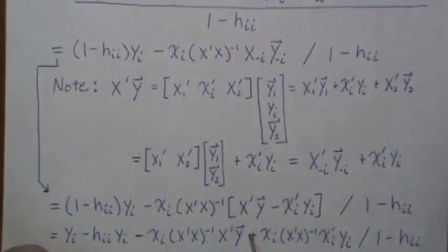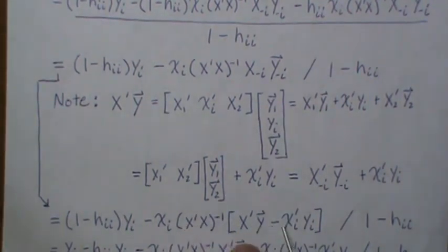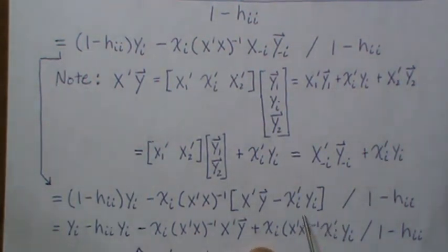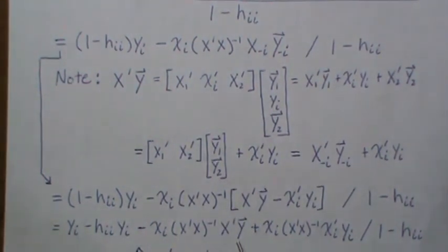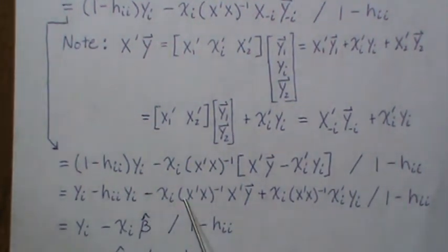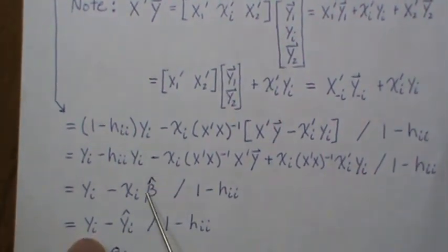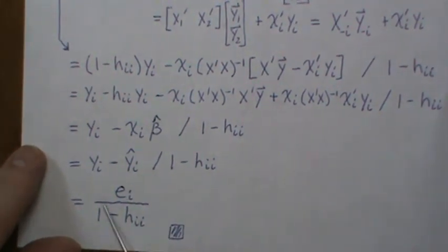After cancellation, the remaining term involves X_i·(X_transpose·X)^{-1}·(X_transpose·Y), which is just Y_i_hat — the fitted value from the full model at the ith observation. Substituting that in, the numerator becomes Y_i minus Y_i_hat, which is exactly the ordinary residual e_i. Dividing by (1 - H_{ii}), the PRESS residual equals e_i / (1 - H_{ii}). That's what we wanted to show — you only need the normal residuals and the diagonal of the hat matrix from the full model fit.